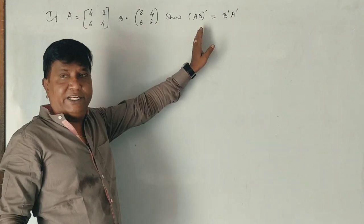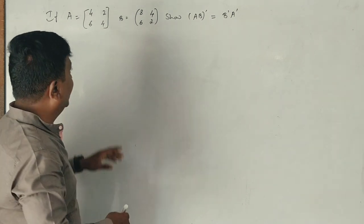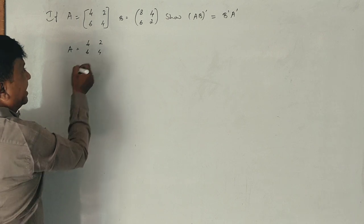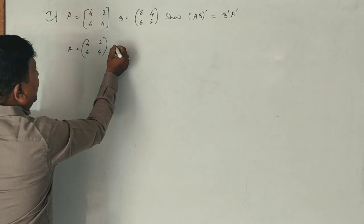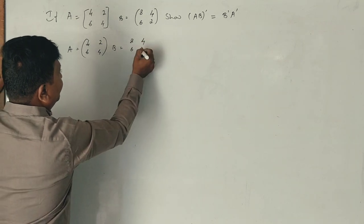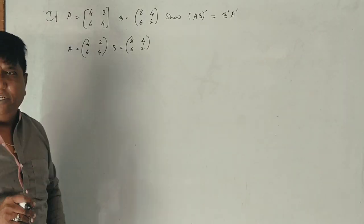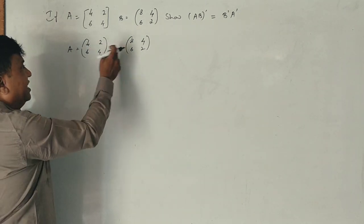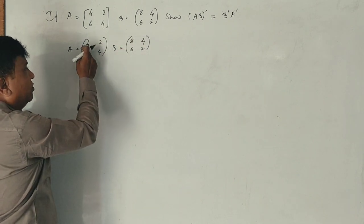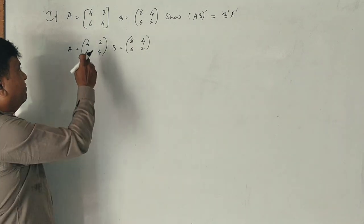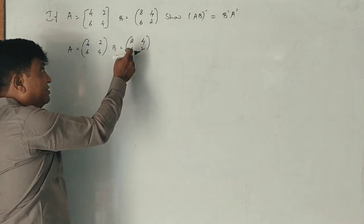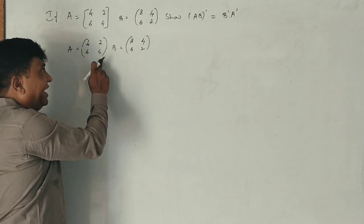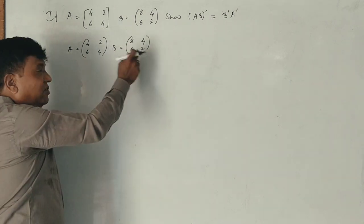First, A B is characterized by A inverse. Matrix A is equal to [4,2,6,4], correct? B is equal to [8,4,1,6], correct? This is the multiplication rule. First row of B and second column of B. Now, second row of A into first column of B and second column of B.